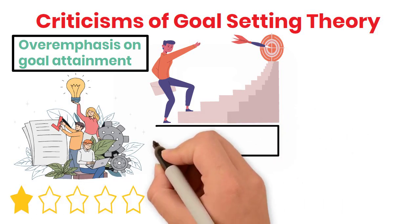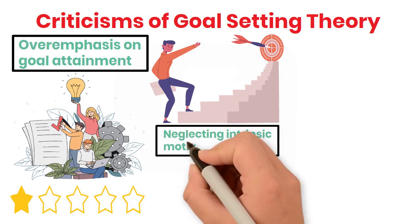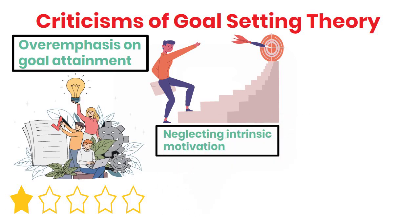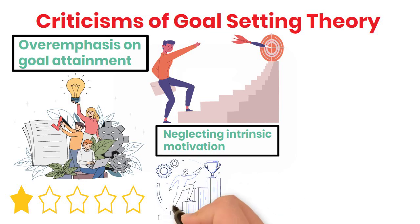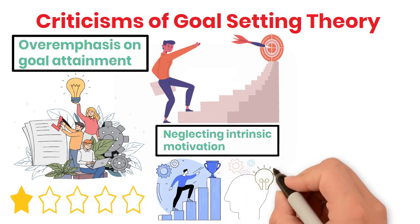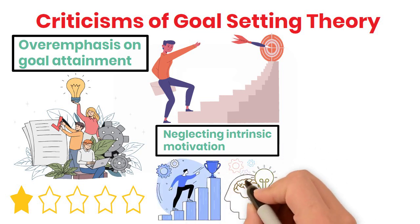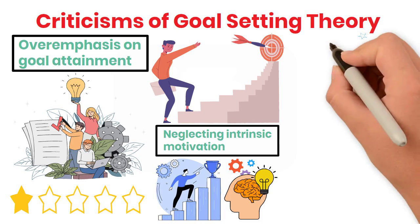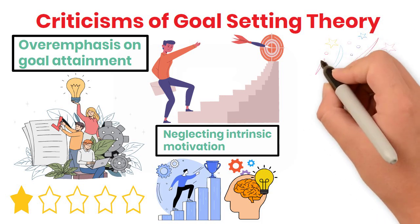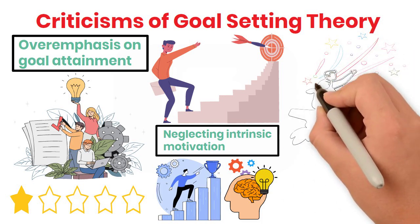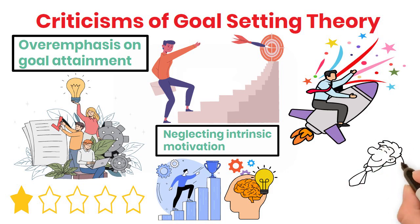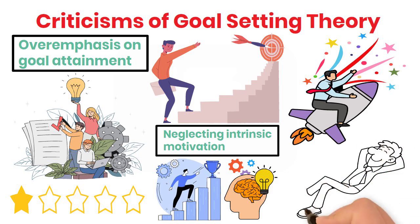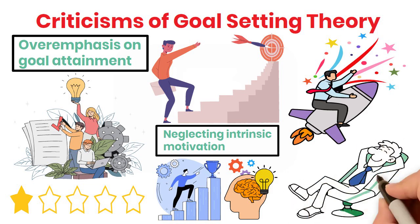Another criticism is the potential for neglecting intrinsic motivation. Goal-setting theory primarily emphasizes extrinsic motivation, which may undermine intrinsic motivation in some cases. For instance, when individuals are overly focused on external rewards, such as bonuses or promotions, they might lose sight of the inherent enjoyment or satisfaction derived from the task itself.